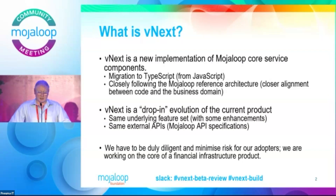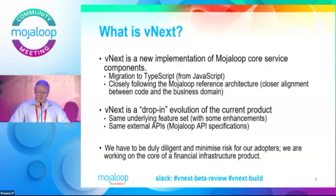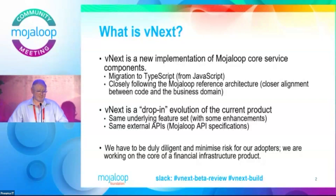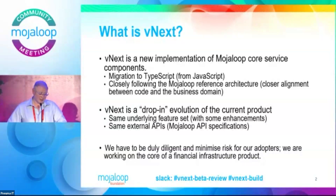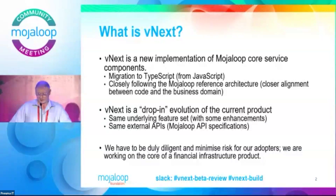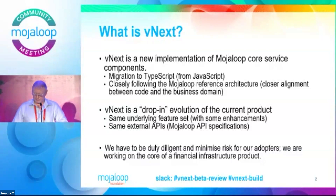vNext is a drop-in evolution of the current product. It has the same underlying feature set with some enhancements, the same external APIs, so it complies with the MojoLoop API specification. And because we're touching important parts of MojoLoop, which at its heart is a product to support critical financial infrastructure, we're being conservative and taking a lot of care in this project to make sure we deliver a solid outcome.